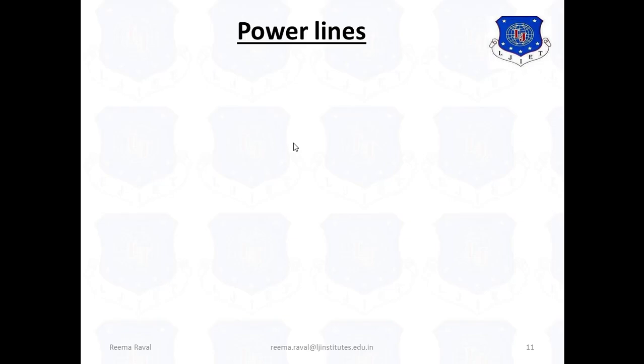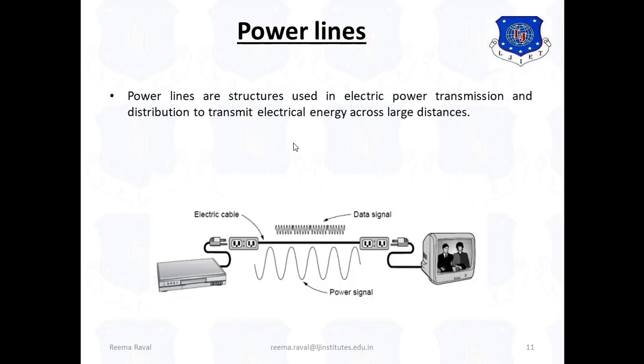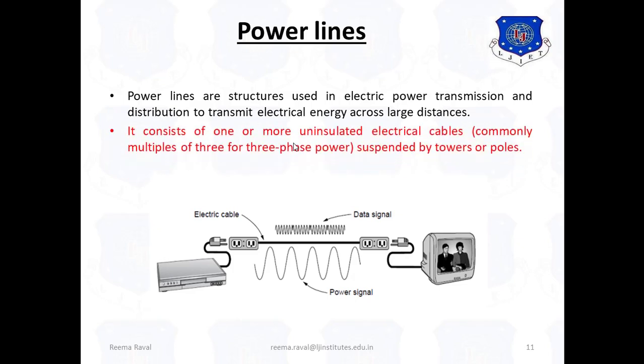Next one is power lines. Power lines are structures which are used in electric power transmission and distribution to transmit electrical energy across larger distances. It consists of one or more uninsulated electrical cables suspended by towers or poles.